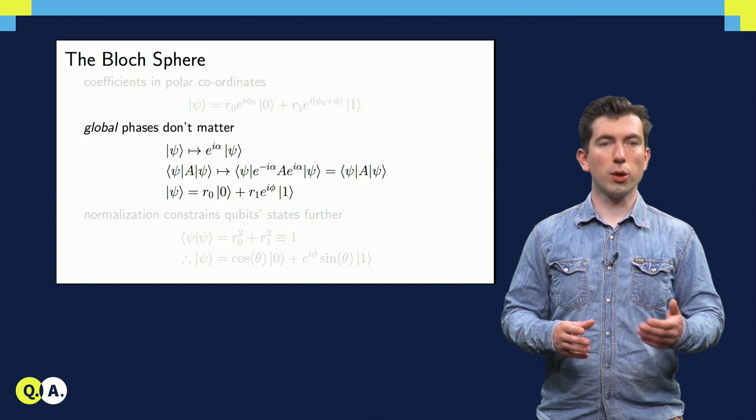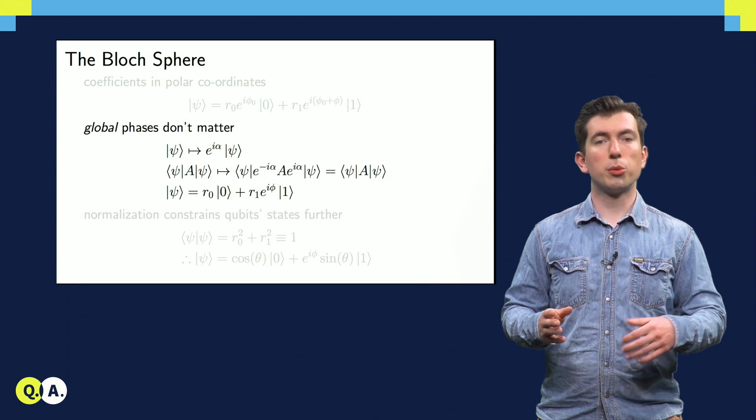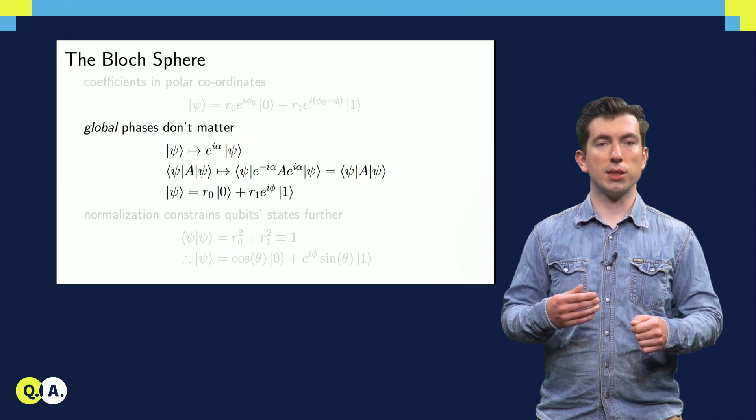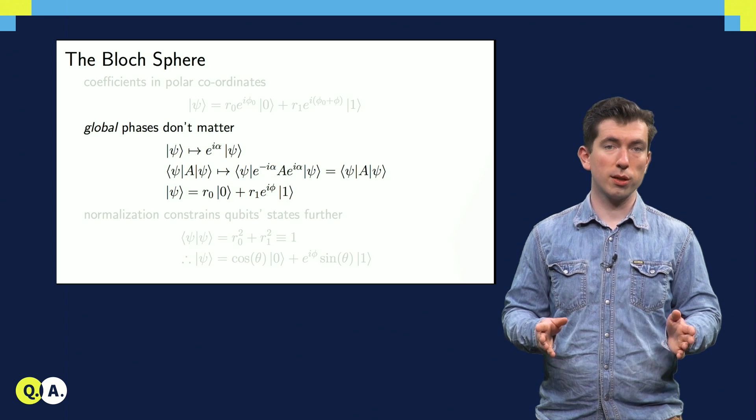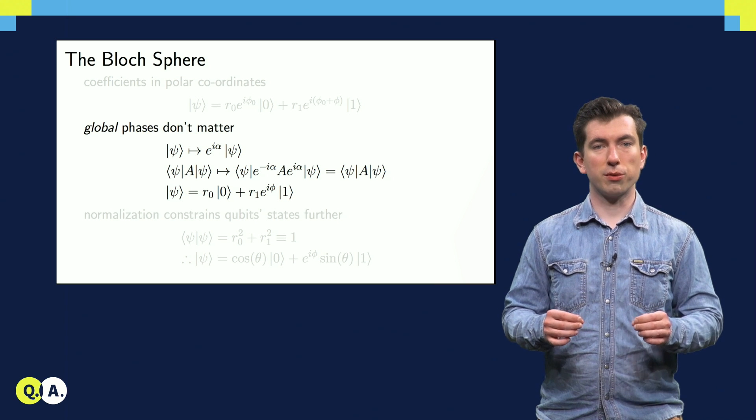Next, we can note that we can get rid of the phase on the alpha coefficient, since a ket multiplied by a phase produces the same measurement results as the ket itself for any potential experiment, so these are not different in any physical sense. This results in a simpler expression for the state, but it's not yet as simple as it can be.